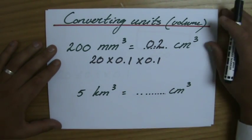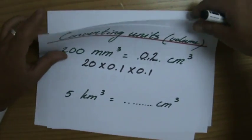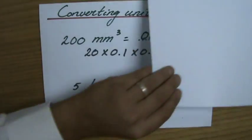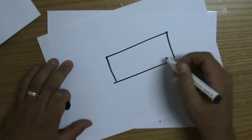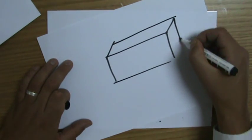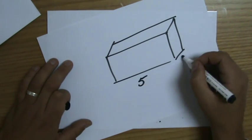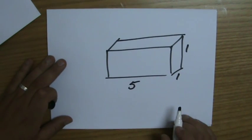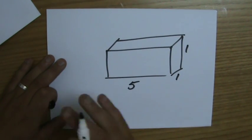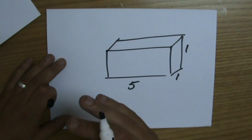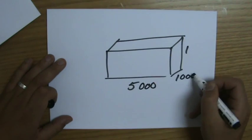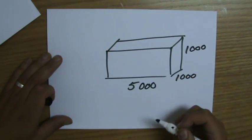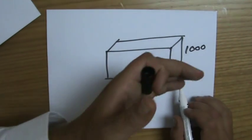Now, second question: five kilometre cube — how many centimetre cubes is that? That is of course huge, very big. I'll use a step-by-step conversion. There are a thousand metres in a kilometre, so five kilometres equals five thousand metres. Then I go from metres to centimetres.